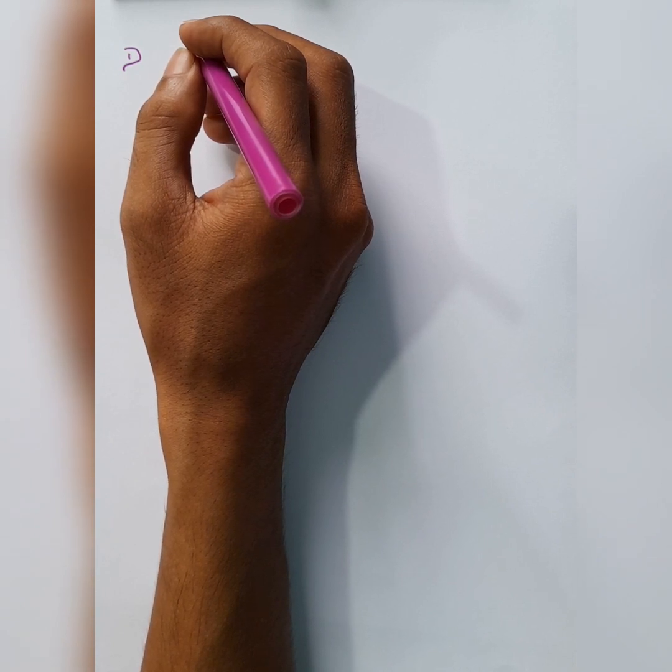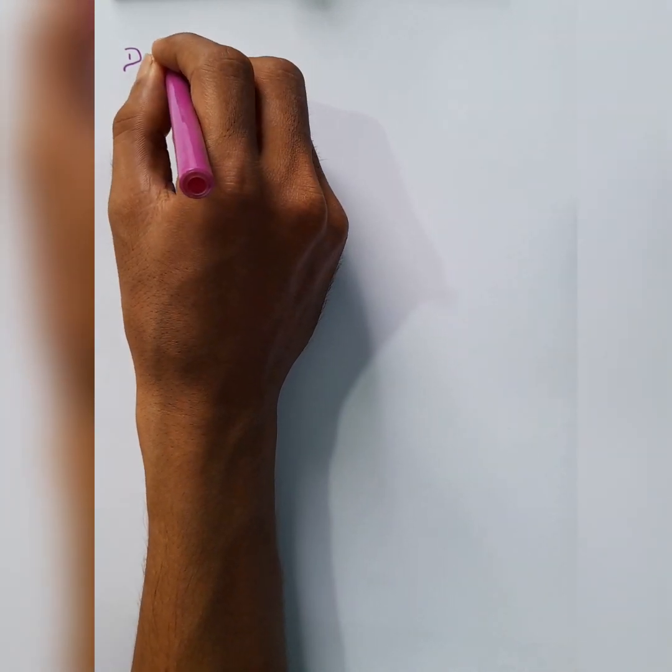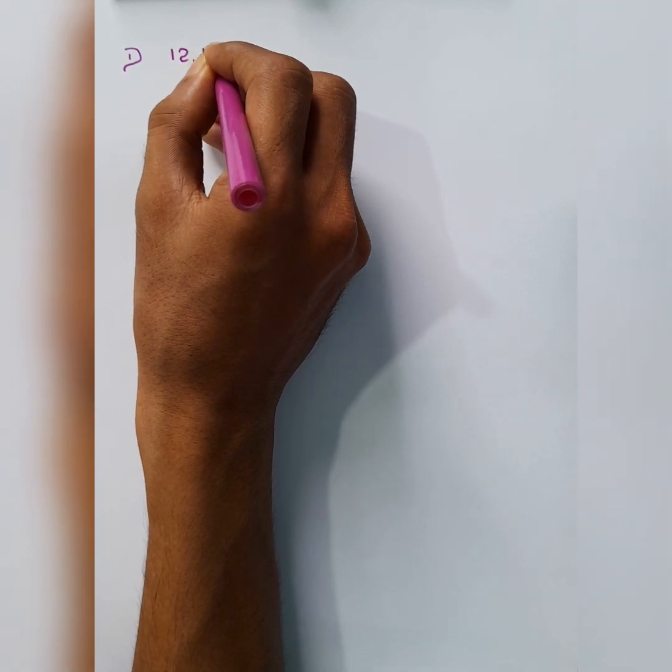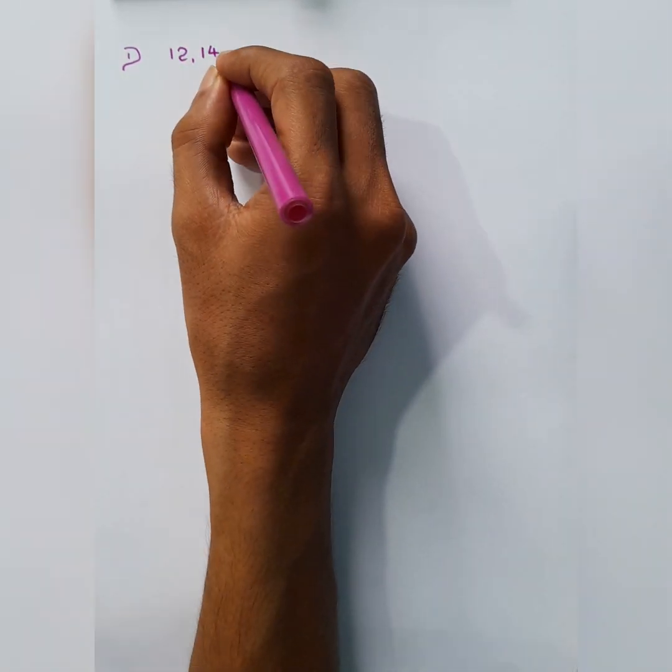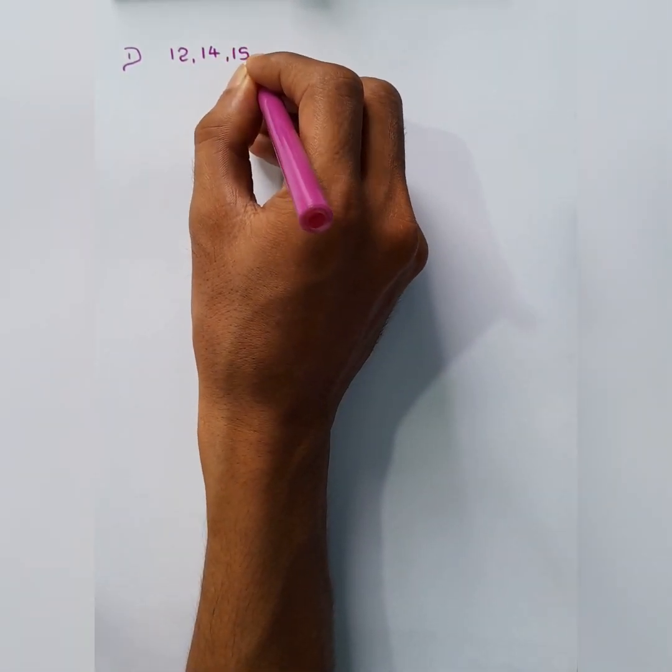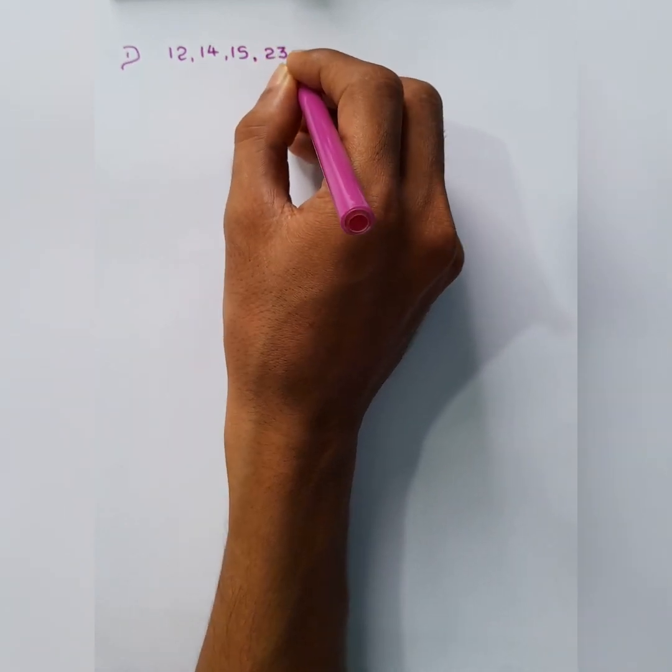For an example, 12, 14, like this they will be giving some data for you. 15, 23, 17.